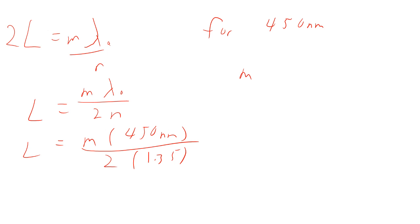So once again, M can be equal to 0, or 1, or 2, or 3, or so forth. So if M equals 0, obviously the thickness is 0. So if M equals 1, it's 167 nanometers. If M equals 2, it's 333 nanometers. If M equals 3, it's 500 nanometers.